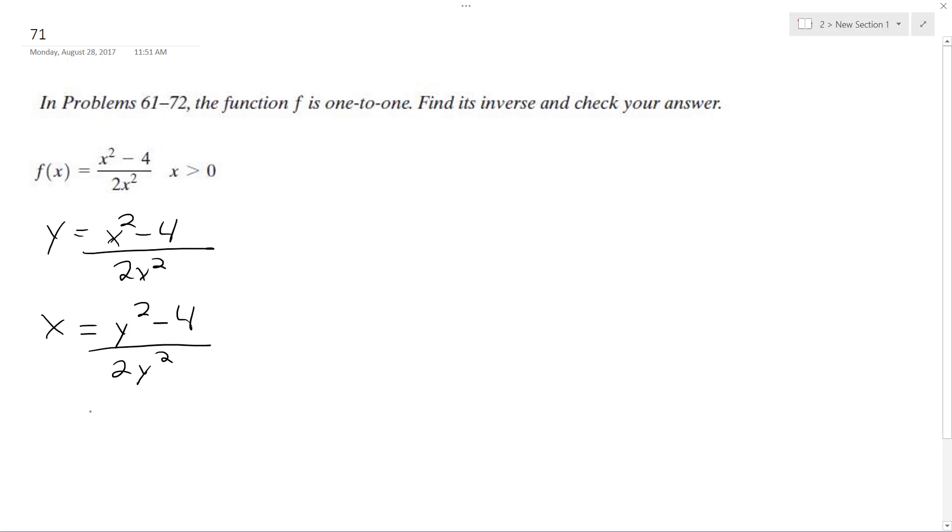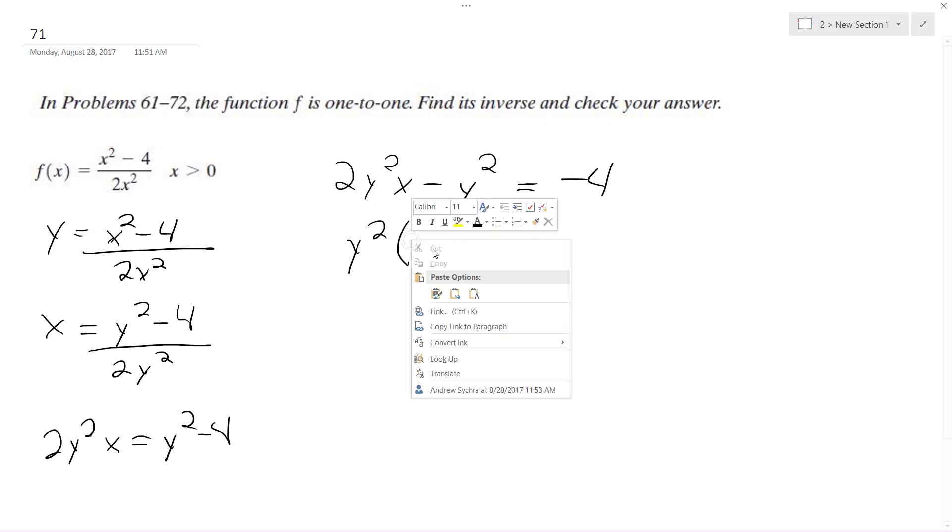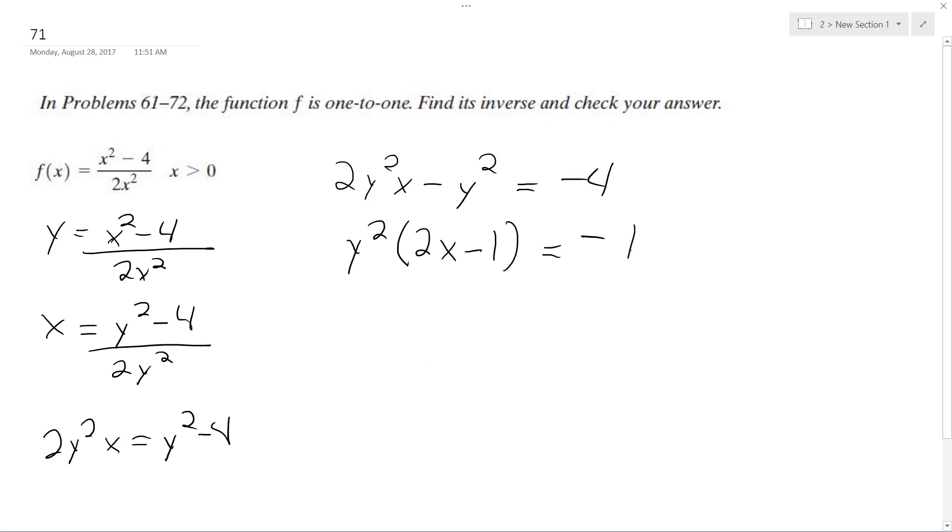Alright, so 2y squared x equals y squared minus 4. Get the y's on one side. So we're going to have 2y squared x minus y squared equals negative 4. Pull out the y squared so I get y squared times 2x minus 1 equals negative 4. So y squared is equal to negative 4 over 2x minus 1.